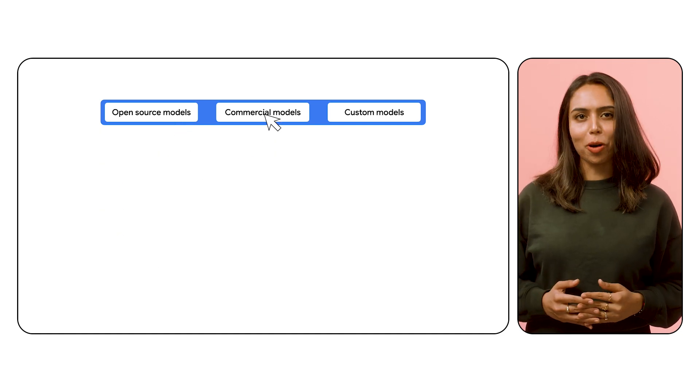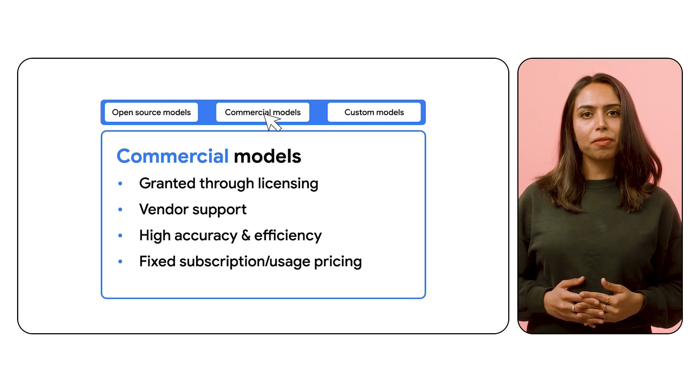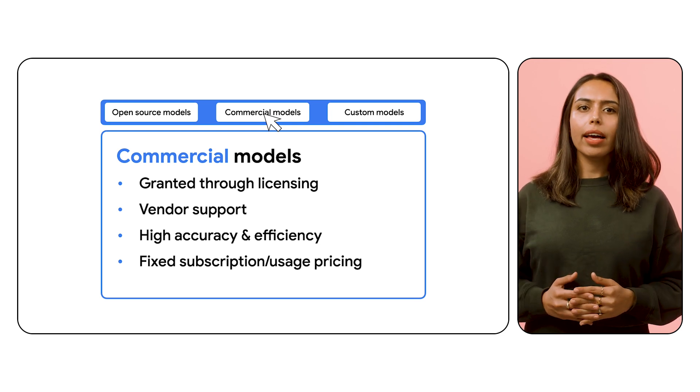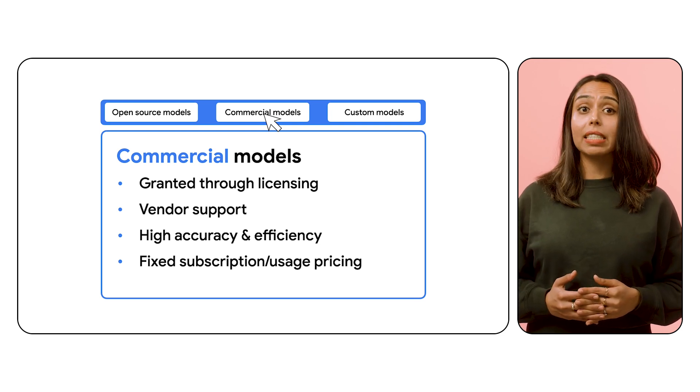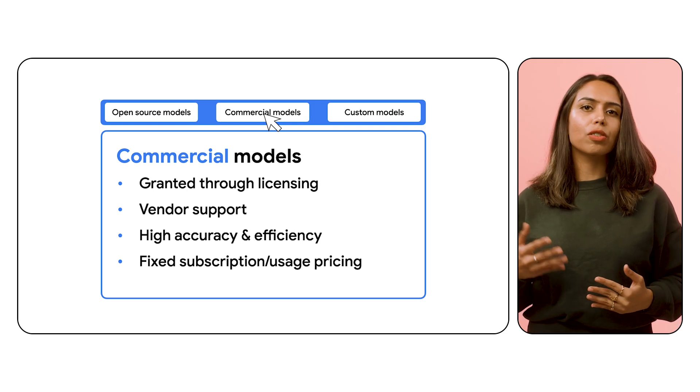Next, we have commercial models. They come with different sets of advantages, like user-friendly interfaces, high performance, and often require some type of dedicated vendor support. This makes them suitable for organizations prioritizing ease of use and reliability. The thing to note is that commercial models typically come with subscription costs and possibly a longer-standing contract with a vendor. When determining if a commercial model is right for your business, think about the importance of platform flexibility versus convenience.